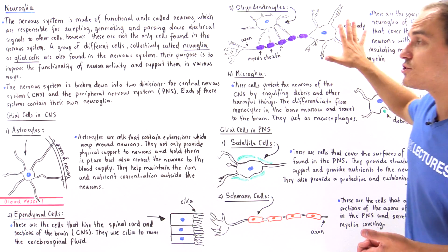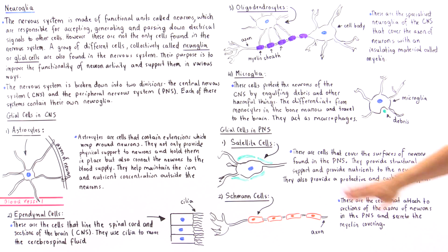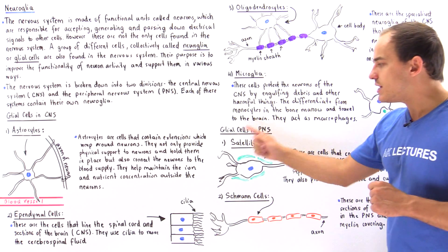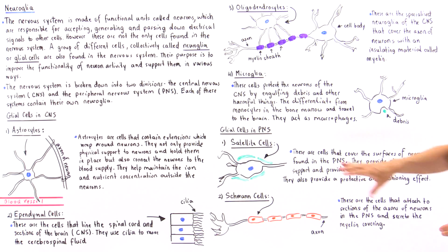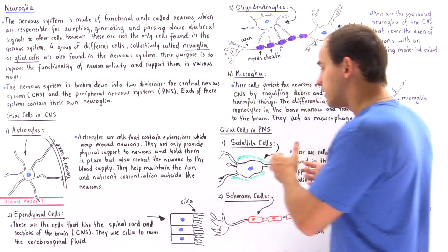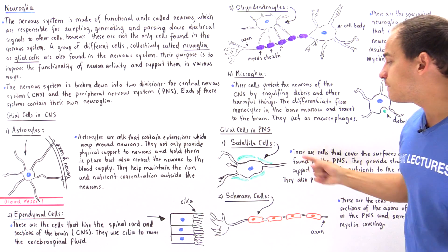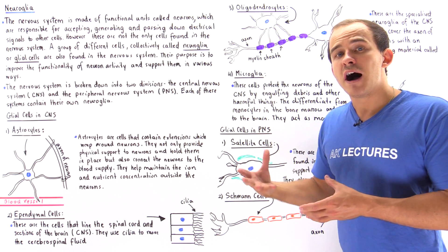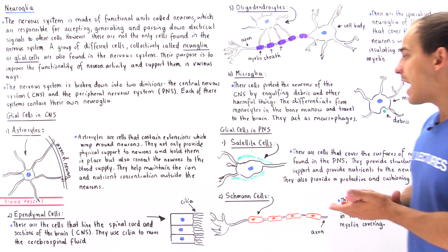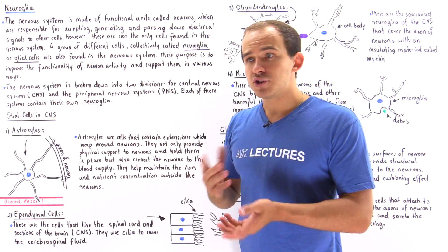Those are the four major types of neuroglia found within our central nervous system. In the peripheral nervous system, we have satellite cells and Schwann cells. The function of satellite cells is very similar to the function of astrocytes, though their structure is somewhat different. Satellite cells cover the outside surface of the neurons and provide a supply of nutrients. They also give structure and support to our neurons and protect and cushion those neurons so that they aren't damaged in any way.